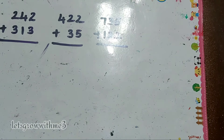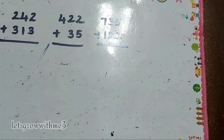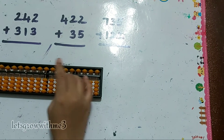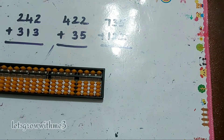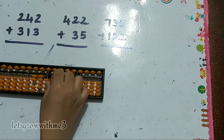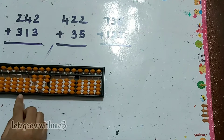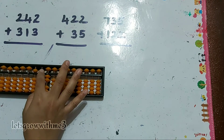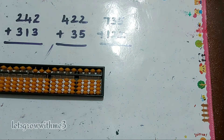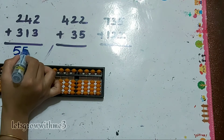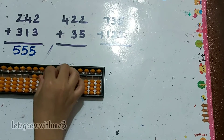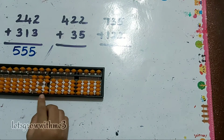Okay, let's do some more problems. Hope you can do all the problems. 242 plus 313: plus 5 minus 2, plus 1, plus 5 minus 4, plus 3, plus 5 minus 2. So our answer is 555.